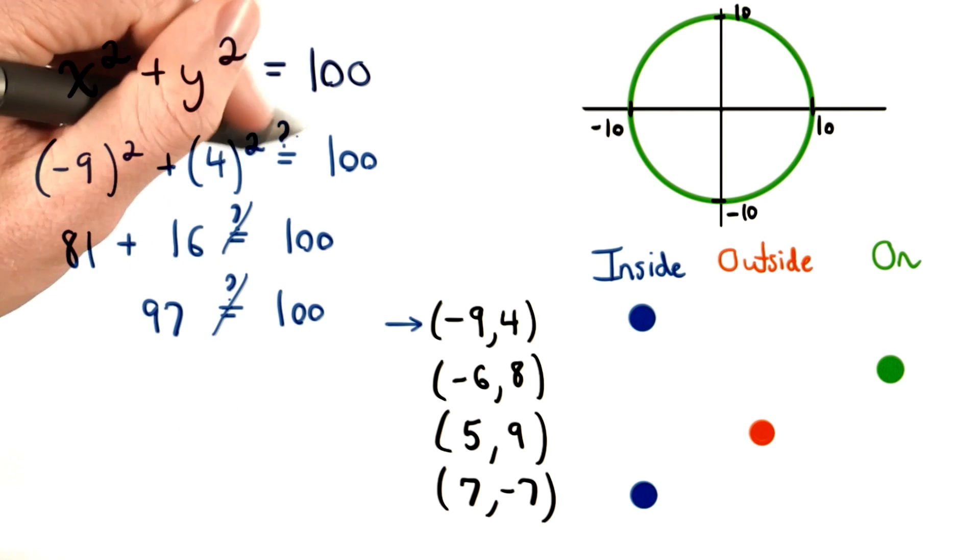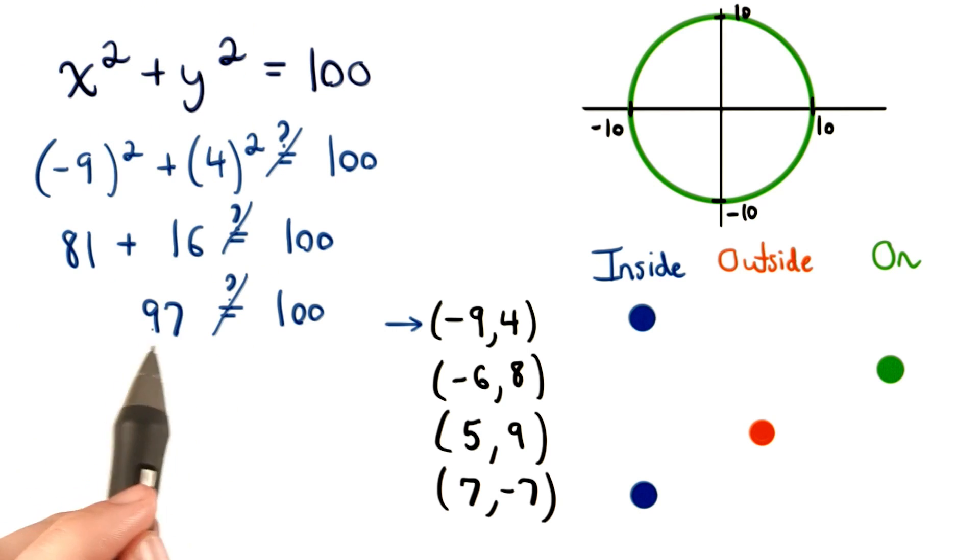We know that's not equal to 100, and in fact, this is less than 100. Since (-9)² + 4² equals 97, we really know that we're inside the circle.